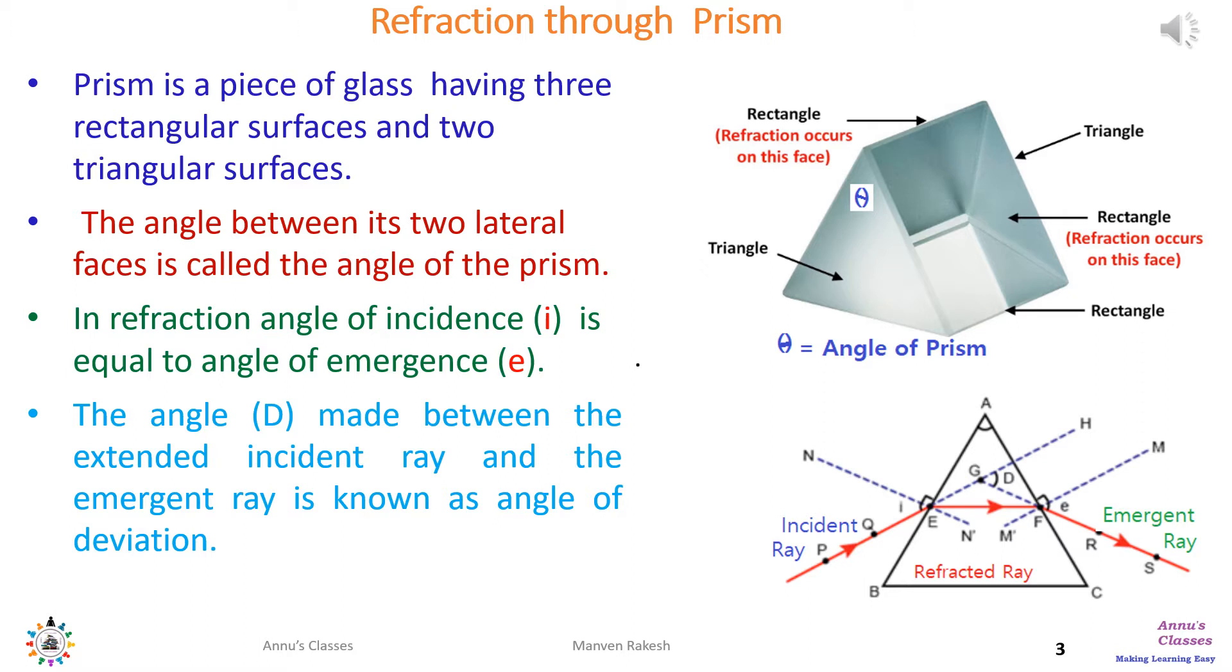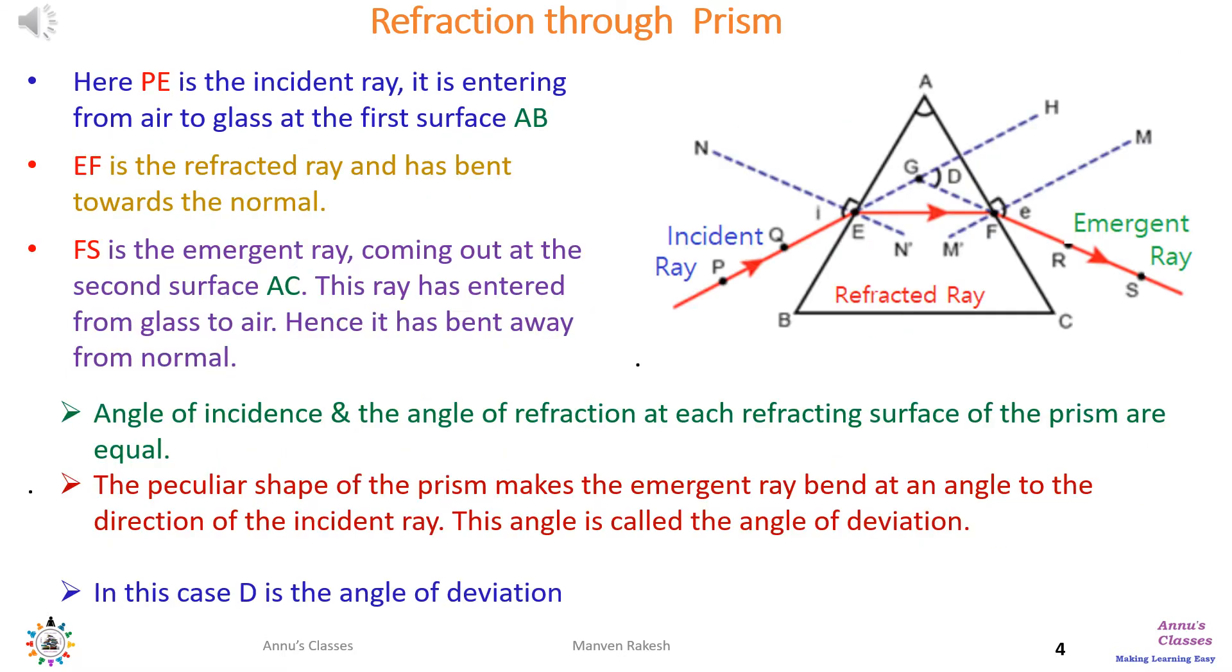The lower figure shows the incident ray and the emergent ray shown as a red ray. When it is passing through the prism, it is called the refracted ray. The angle made between the incident ray and the emergent ray is the angle of deviation.